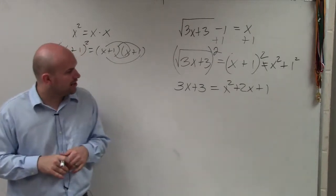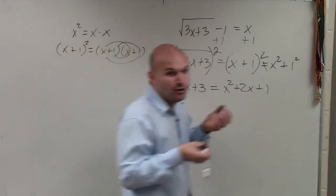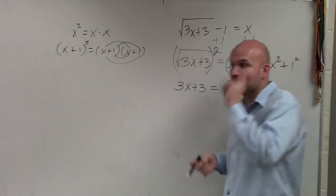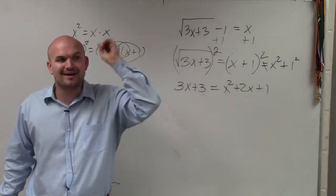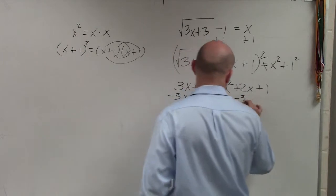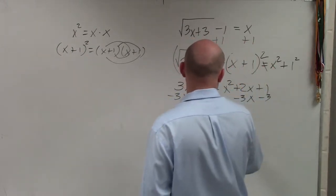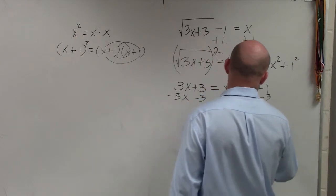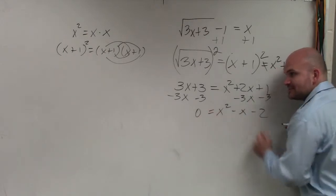Now, the next thing, Mario, that we're going to do is now we're going to solve quadratics. Well, we spent a whole chapter on solving quadratics. And if you guys remember, the first thing when we solved quadratics is we had to set the equation equal to 0. So to do that, I'm going to subtract the 3x. And I'm going to subtract the 3. Now, I have 0 equals x squared minus x minus 2. Now, I have a quadratic equation equal to 0.